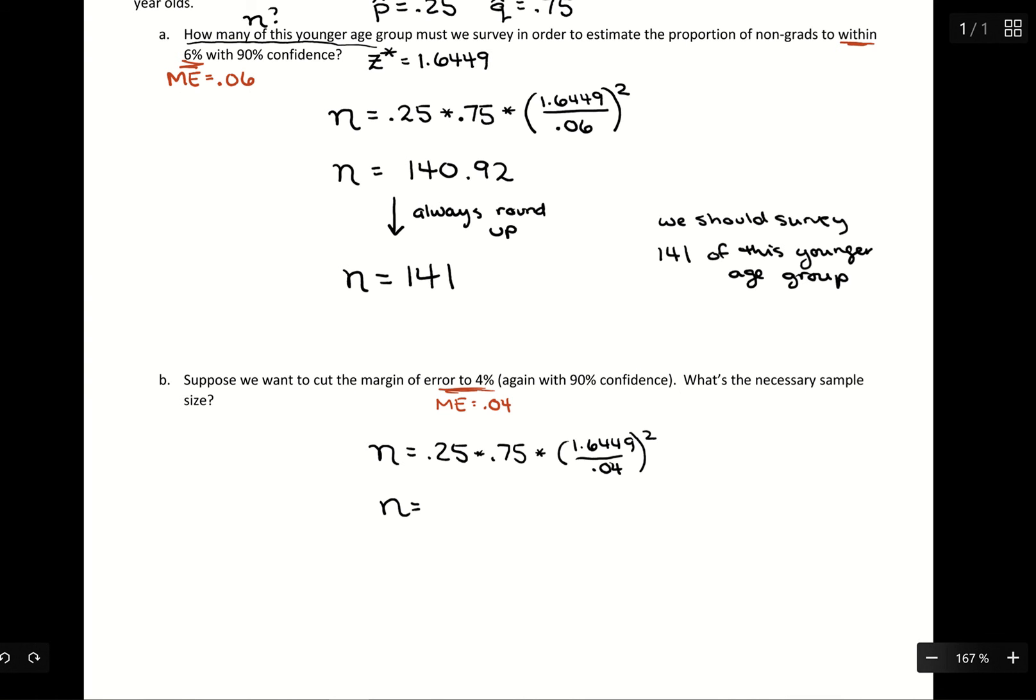If we put that into the calculator, that's going to be 317.07. Now this is a good example of where typically, following mathematical rounding rules, we would round down. However, with sample size, always round up.